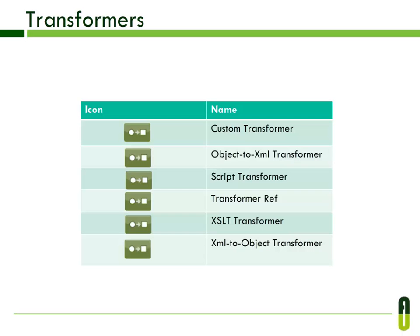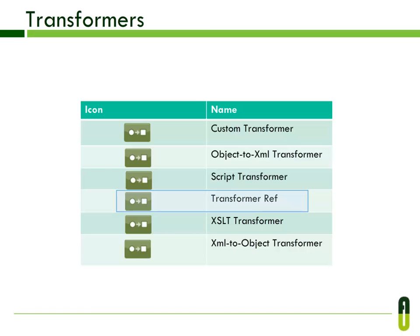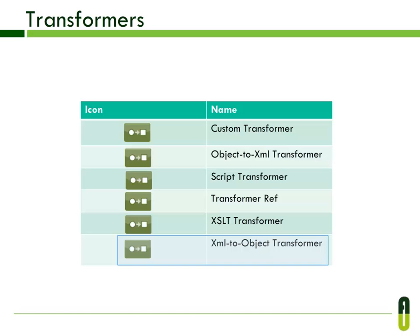Here you can see the different types of transformers. The Custom transformer delegates to a Java class. The Object to XML transformer converts a Java object to an XML representation using Stream. The Script transformer uses a script to transform the payload. The Transformer ref references a global transformer. The XSLT transformer transforms XML using XSLT. The XML to Object transformer converts XML to Java bean graphs using Stream.